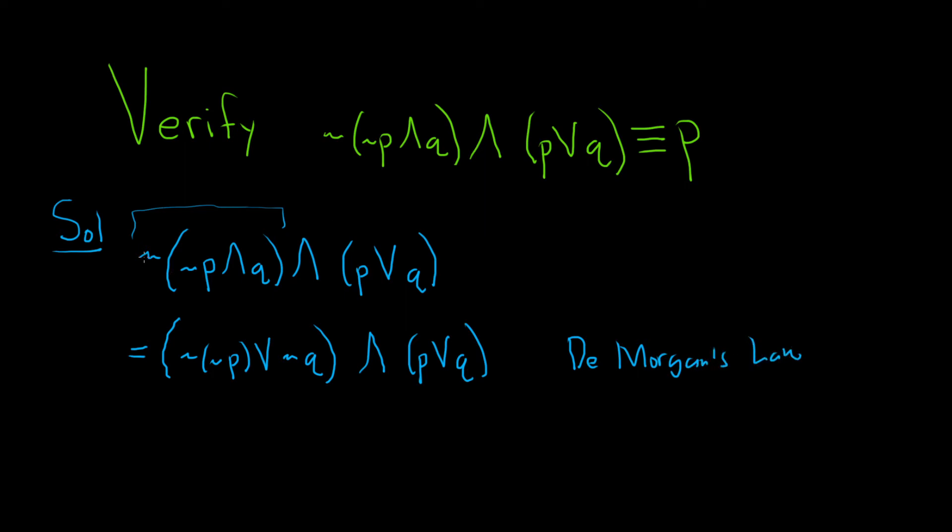De Morgan's law says when you have something like this, you just take the negation of each piece and turn the and into an or. The next thing to do is maybe use the double negative law because we have the negation of the negation.